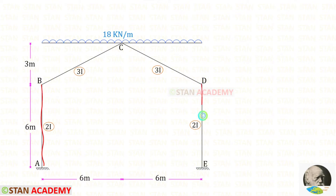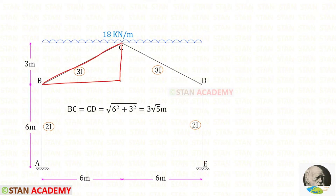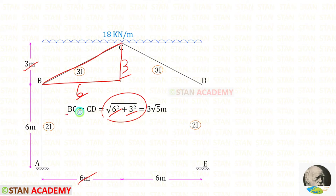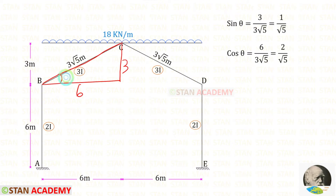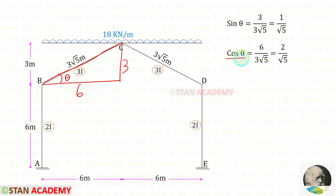The height of AB and DE is given as 6 meters. We have to find the inclined length of BC and CD. Taking this triangle, the base is 6 and the height is 3. Using Pythagoras theorem: root of 6 squared plus 3 squared gives the length of BC and CD, which is 3 root 5. Keeping this angle as theta, sin theta equals 3 upon 3 root 5, which simplifies to 1 upon root 5. And cos theta equals 6 upon 3 root 5, which simplifies to 2 upon root 5.